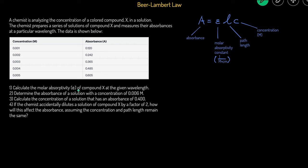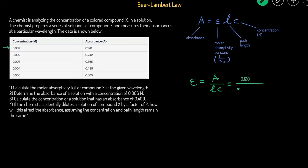Question one asks us to calculate the molar absorptivity E at the given wavelength. Using A = ELC and isolating E, we get E = A / (L × C). We can use any trial since the molar absorptivity should theoretically be the same across trials. Using the first trial: absorbance is 0.120, path length is 1 cm (default), and concentration is 0.001 M. Plugging in gives E = 120 cm⁻¹M⁻¹.